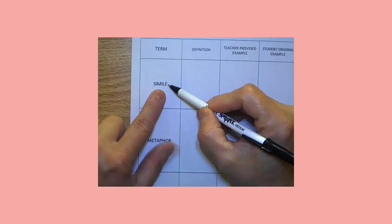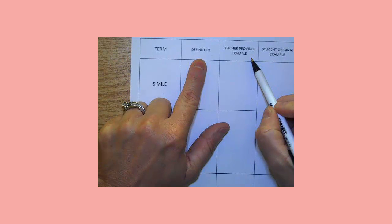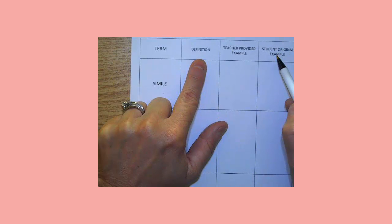So together as a class, we're going to talk about the term. I'm going to give you the definition and an example, and then later in your groups, you're going to generate your own examples and find some samples in the poems that we've read.